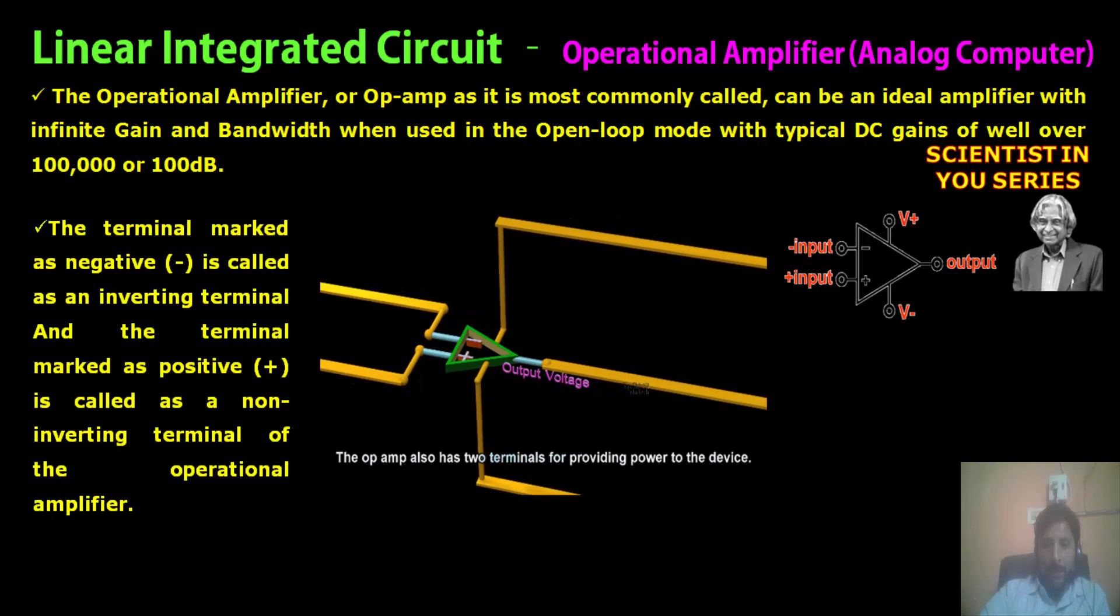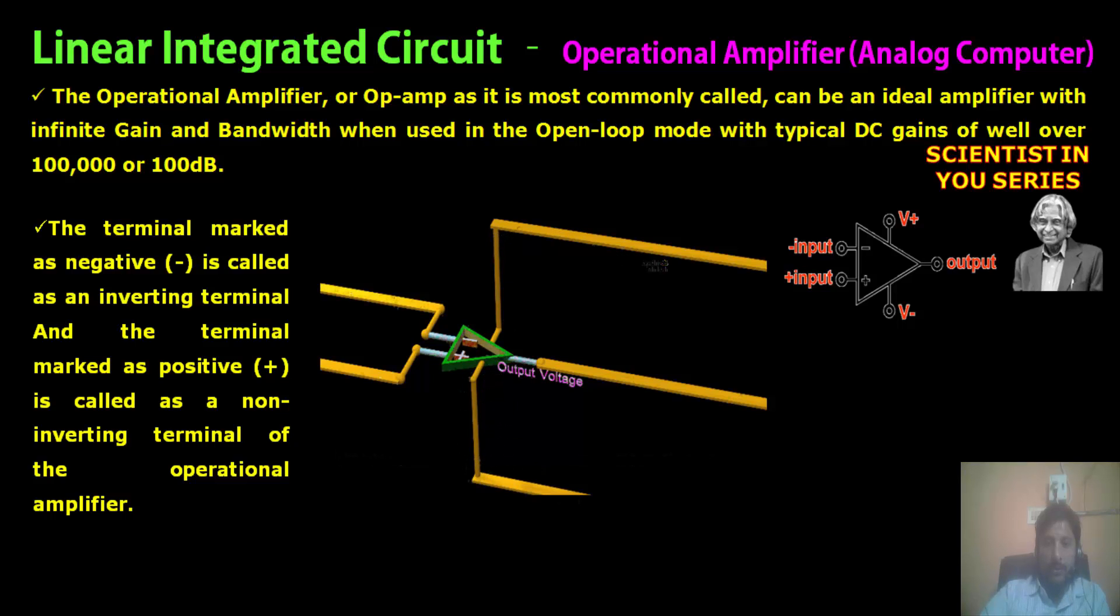To supply power to this particular op-amp, we need another extra two terminals through which we are able to supply power. Current won't pass via the input terminals.